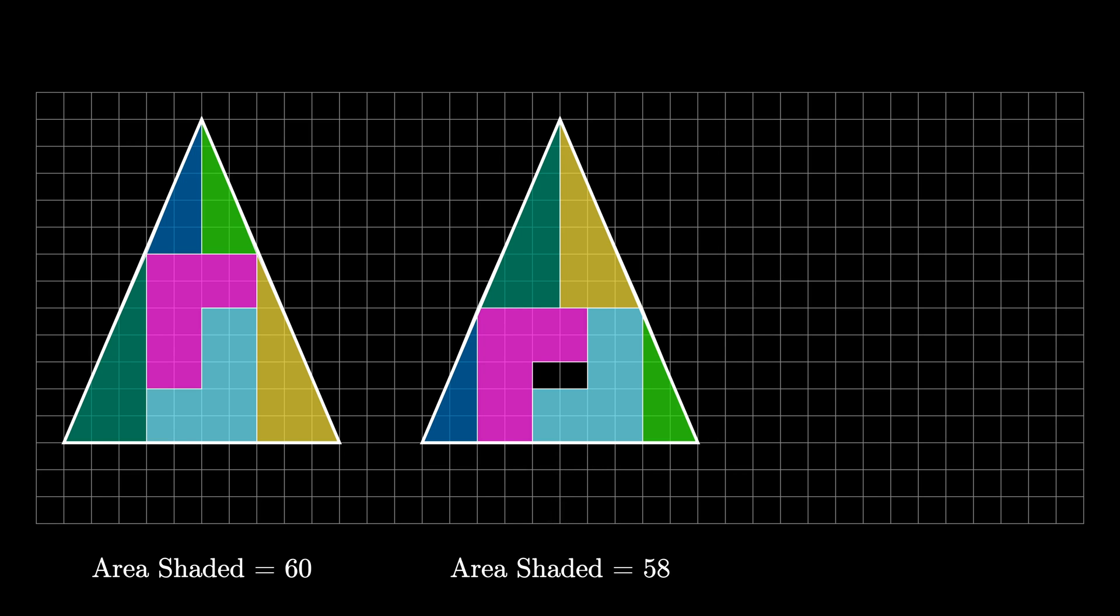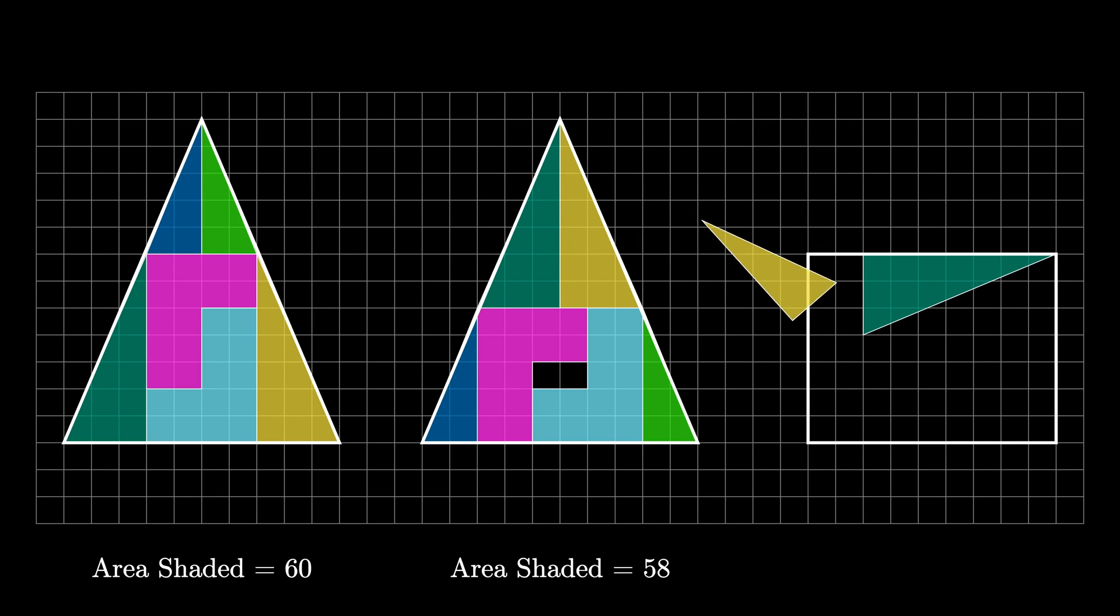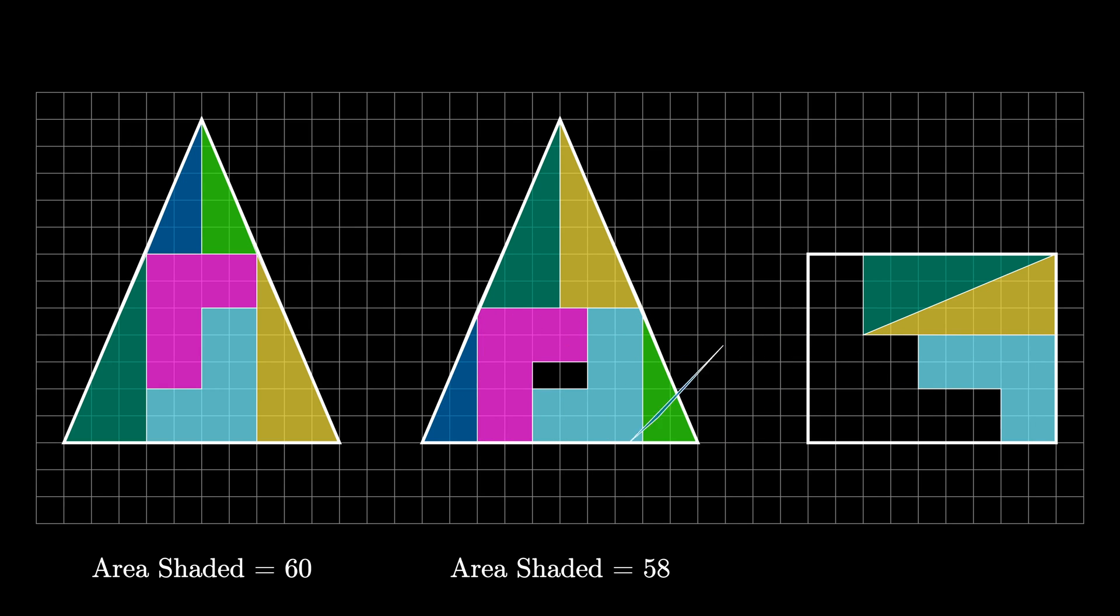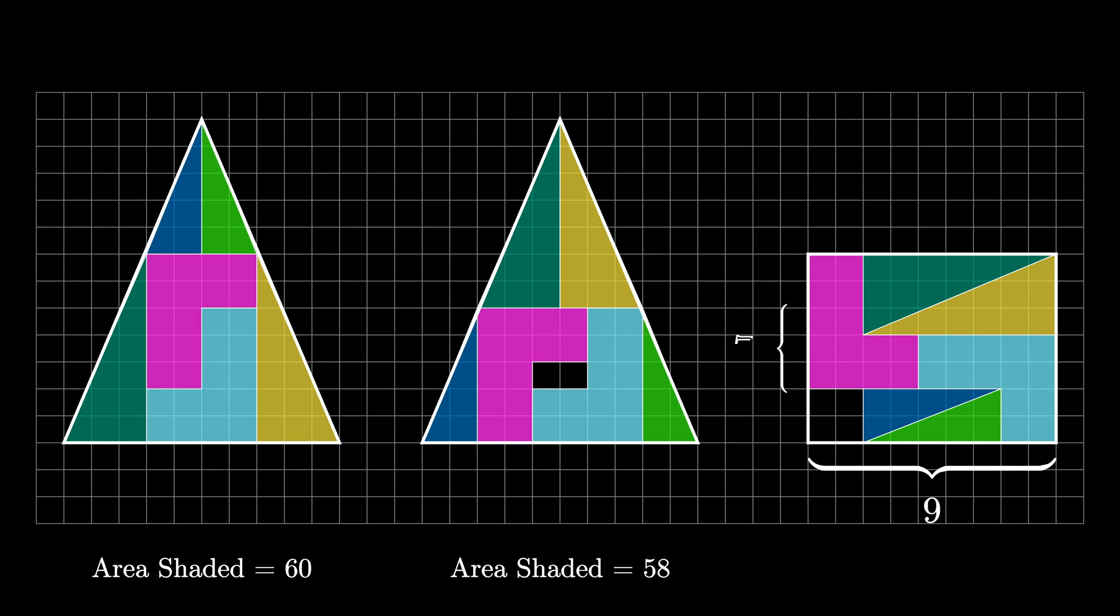But we can do even more. Now let's draw a 9 by 7 rectangle and use the tiles to fill in the rectangle as shown. There are now four unshaded squares in this diagram. Because the rectangle is 9 by 7, the shaded area is now 63 minus 4, or 59.